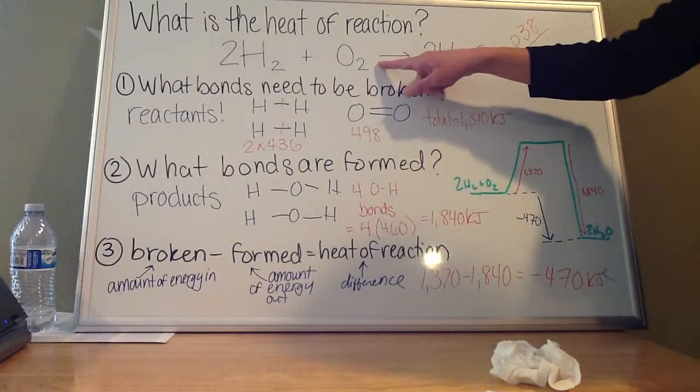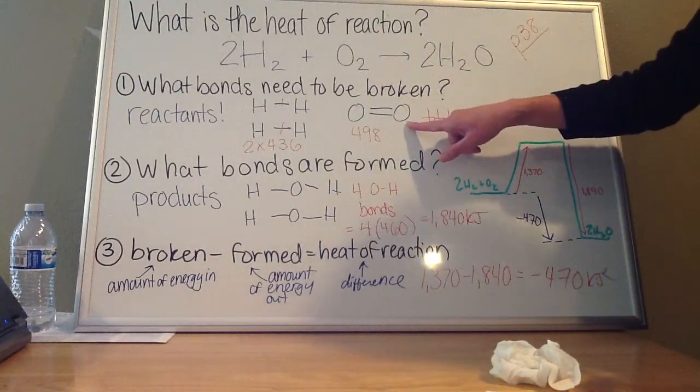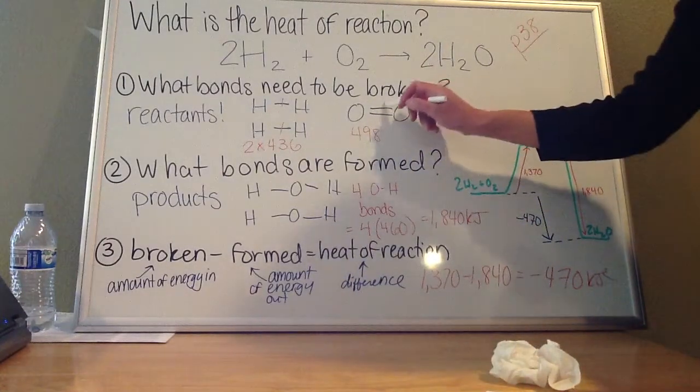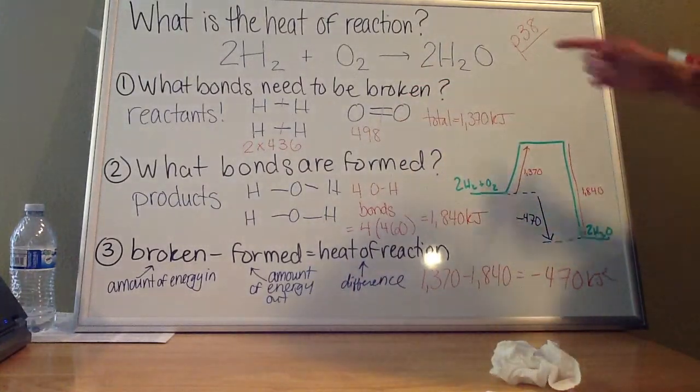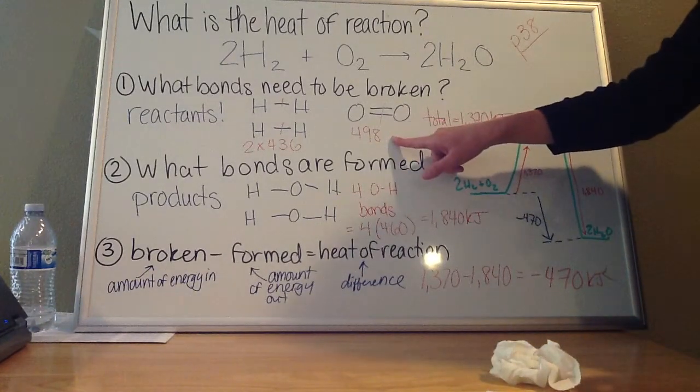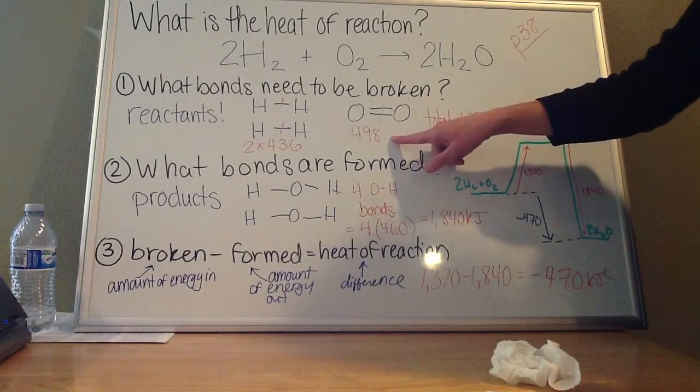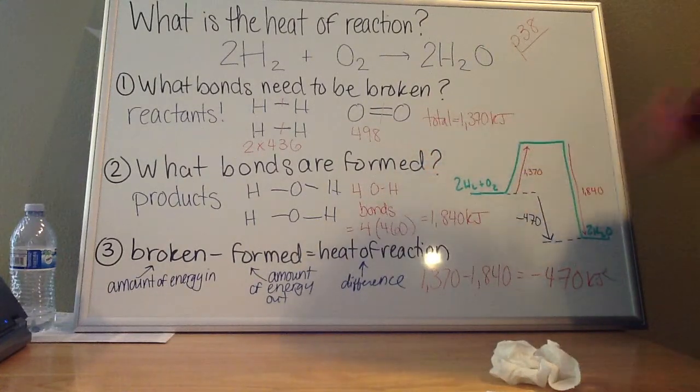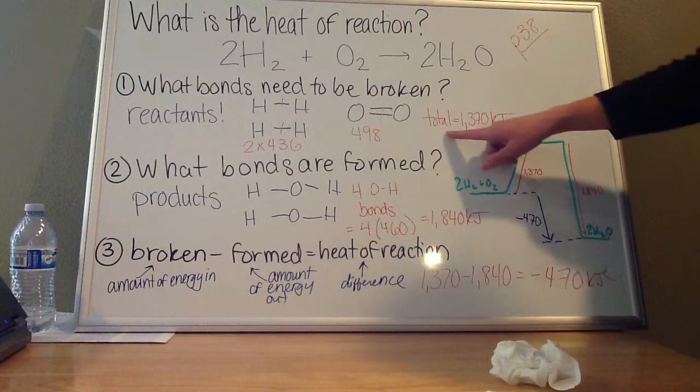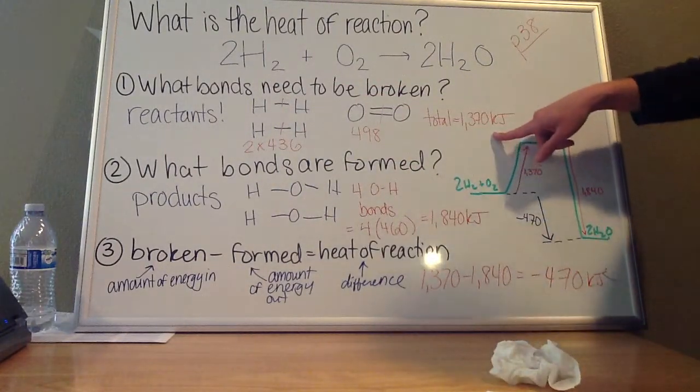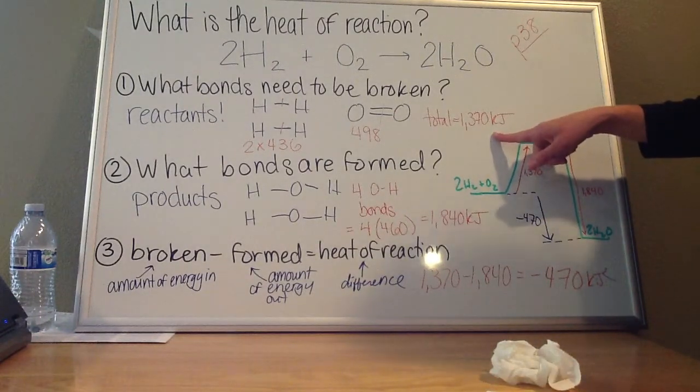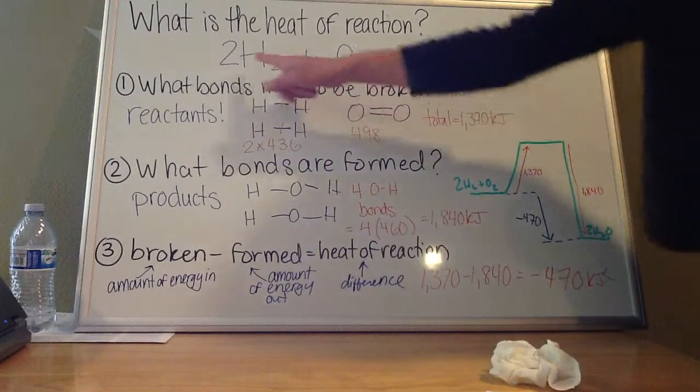My oxygen molecule, the two oxygen atoms in this case, are held together by a double bond. And in order to break this double bond, again, if I look on page 38, I'll find that this double bond takes 498 kilojoules of energy to break. So in order to break all of the bonds in my reactants, I'm going to add up all of these energies. And when I do, I'll find that the total energy is 1370. So 1370 kilojoules of energy to break the bonds in my initial reactants.